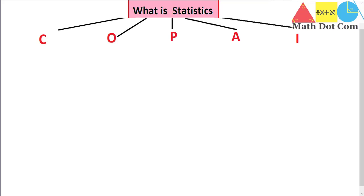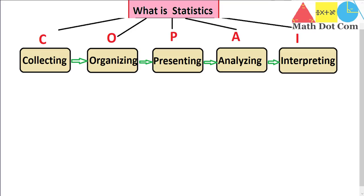What is statistics? If you understand C, O, P, A, and I, it will be much easier for you to conduct research once you know about these five major steps of statistics. C is for collecting, O is for organizing, P is for presenting, A is for analyzing, and I is for interpreting. I think it will now become easier for you to understand the major steps of statistics.